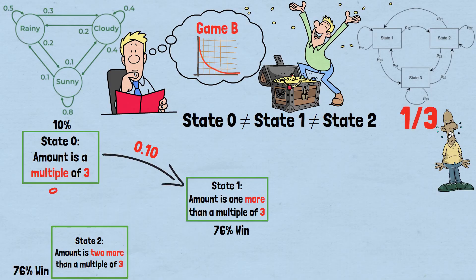When you win B2 from state two (76% probability), you move to state zero. When you lose B2 from state two (24% probability), you move to state one.